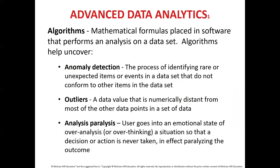Algorithms are mathematical formulas placed in software that often perform an analysis on a dataset. Algorithms can help uncover anomaly detection — a process of identifying rare or unexpected items or events in a dataset that do not conform to other input items. Outliers are data values that are numerically distant from most of the other points in a set of data. Analysis paralysis is when a user goes into an emotional state of over-analysis or over-thinking a situation so that a decision or action is never taken, in effect paralyzing the outcome.